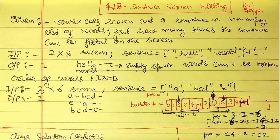Welcome to another dynamic programming question. This question is named 'Sentence Screen Fitting.' We are given a screen specified as rows by columns — a rectangular screen — and a sentence, which is a non-empty list of words. We have to find out how many times the sentence can be fitted on the screen. There are some important conditions from the question which I'm going to explain.